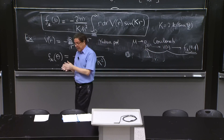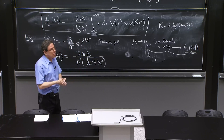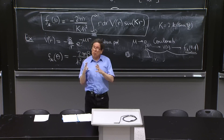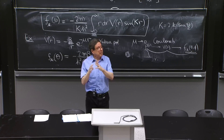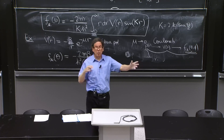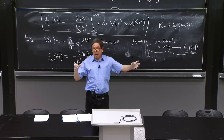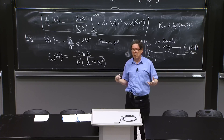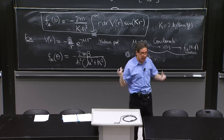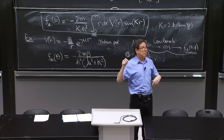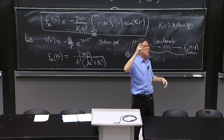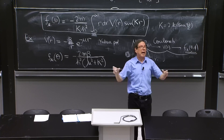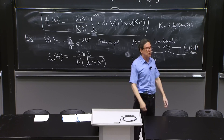If you have a more complicated particle, you can still use the concept of identical particles. For example, take a proton — a proton is a more complicated particle made of quarks. If you have two protons, they are identical in that same sense. All the properties we can assign to the proton — the spin state, mass, dipole moment, magnetic moment — all those are the same. If you prepare those protons in identical states, you cannot tell which is proton one and which is proton two.